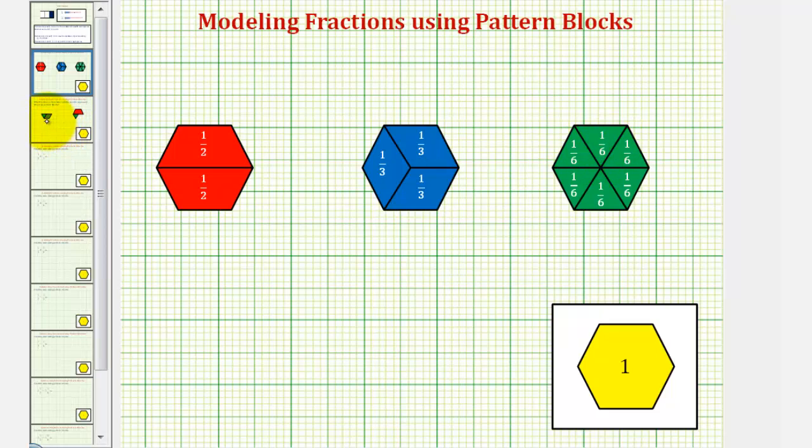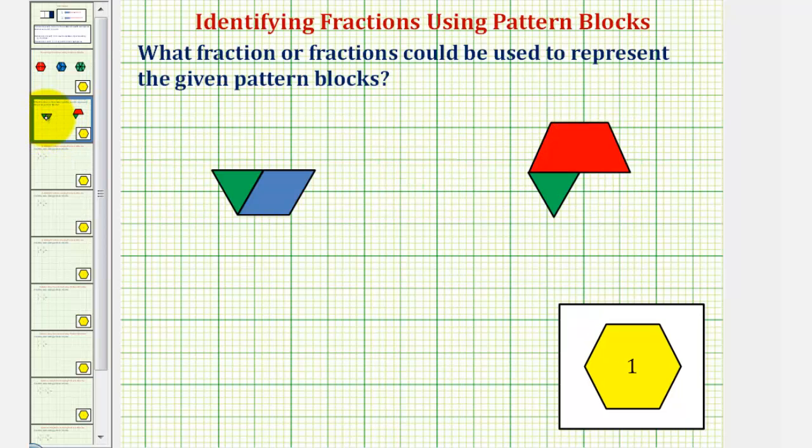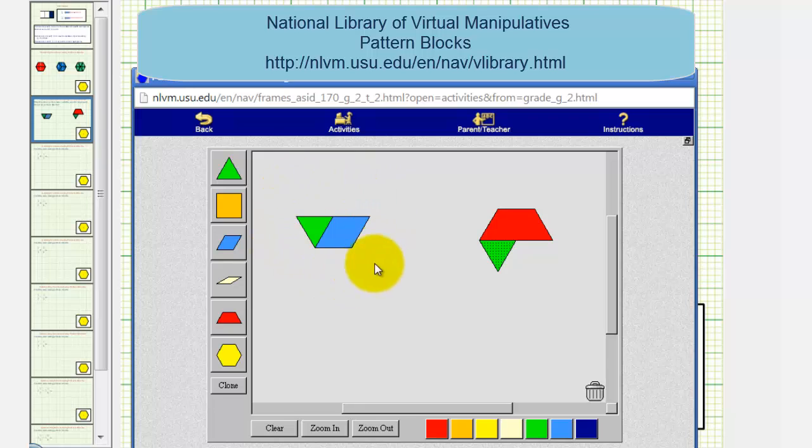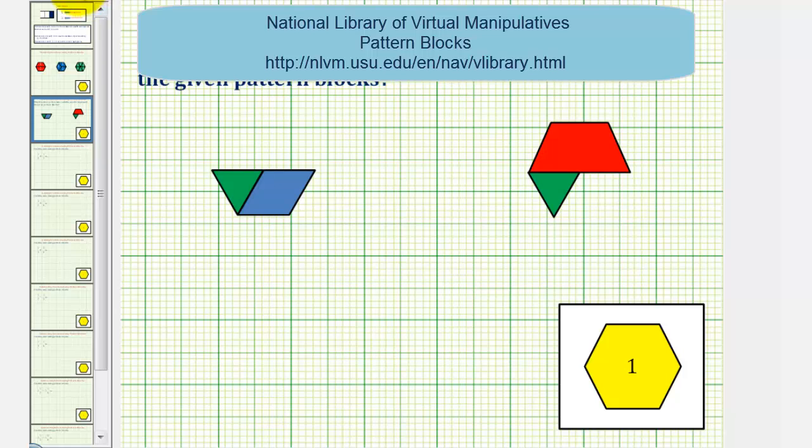So going back to our examples, let's determine what fraction or fractions could be used to represent the given pattern blocks. Looking at our first pattern blocks here, notice how we could replace these two pattern blocks with one red pattern block, which means we could use one half to represent the given pattern blocks. Let's go ahead and write that down.